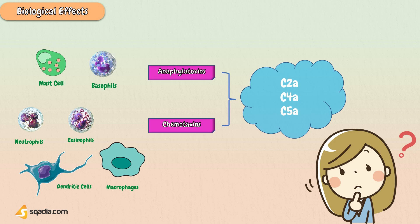In the case of the complement system, they enhance the effect of anaphylotoxins by signaling the neutrophils, eosinophils, dendritic cells, and macrophages to the site of inflammation.